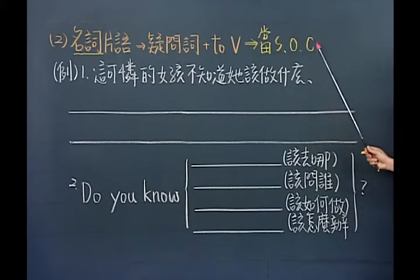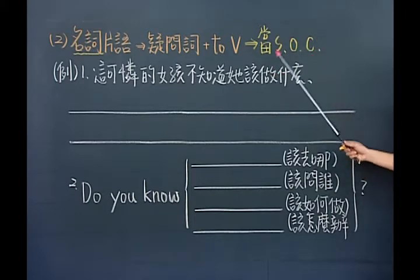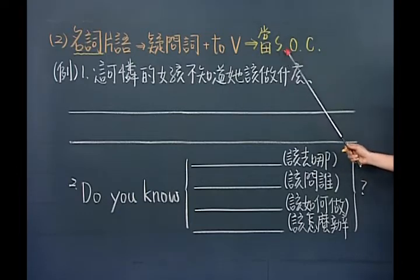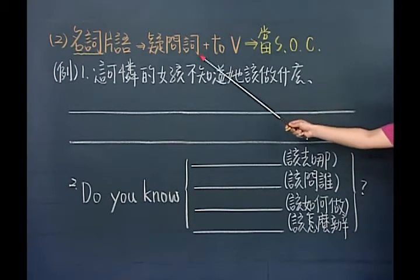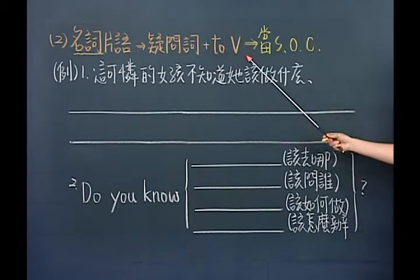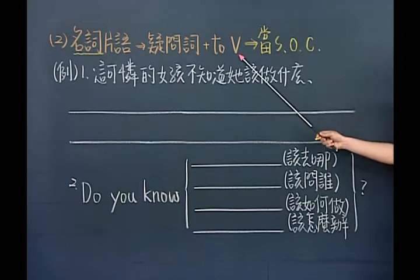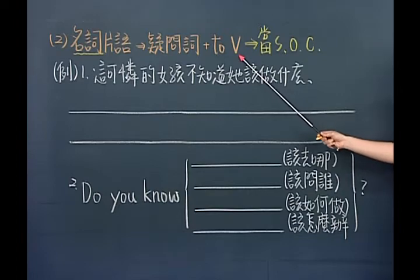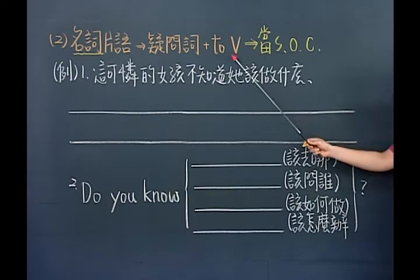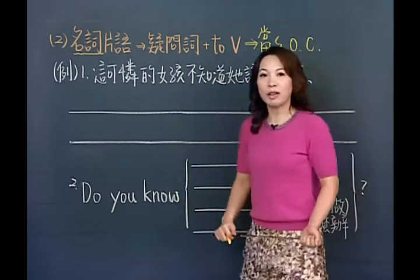疑问词加上不定词，为什么叫名词片语呢？之所以能够称为名词，是它具有名词的功能。名词可以当主词、当受词、当补语。所以在后面的句子里面你就会看到：疑问词加不定词也可以拿来当主词、当受词、当补语。它又扮演了名词的角色，于是我们就称它为名词片语。